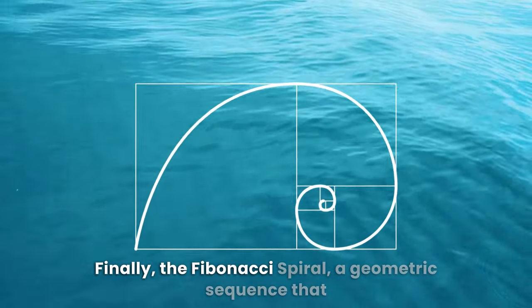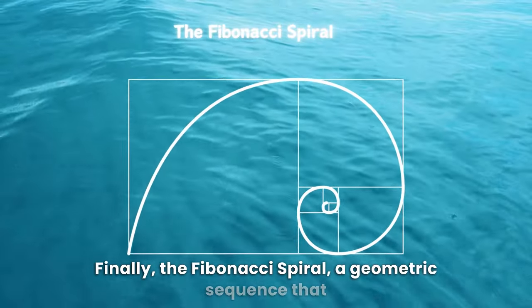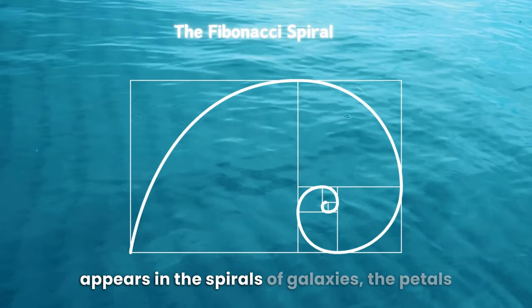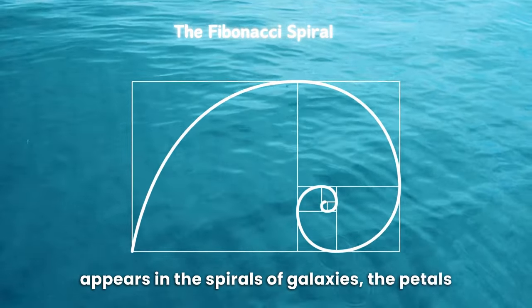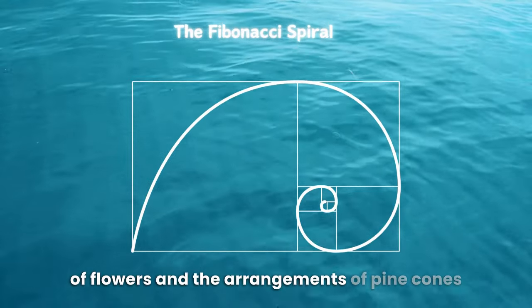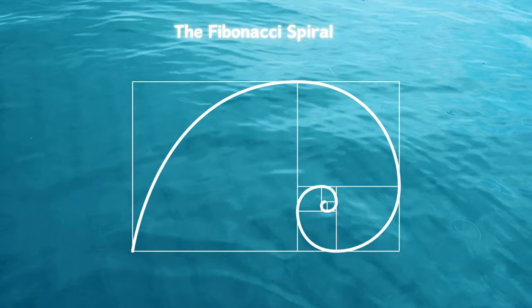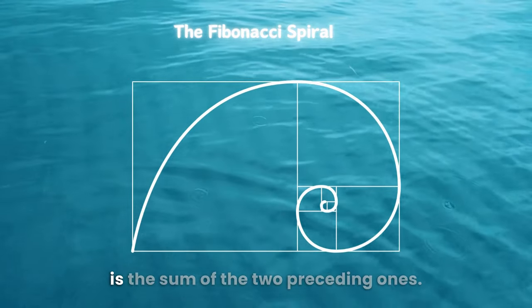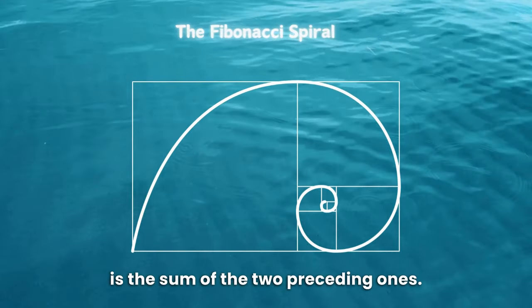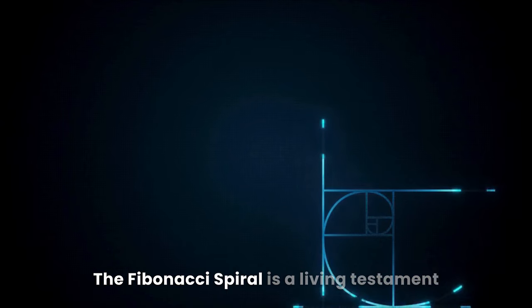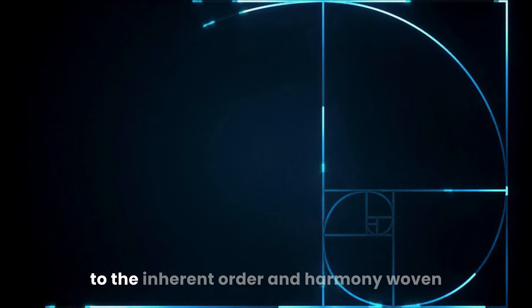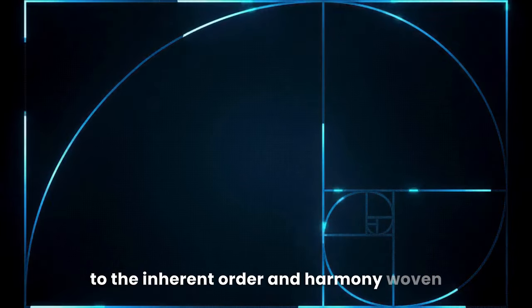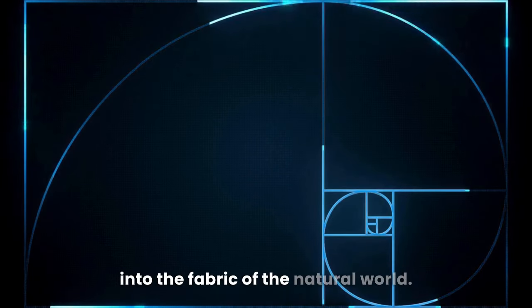Finally, the Fibonacci Spiral, a geometric sequence that appears in the spirals of galaxies, the petals of flowers and the arrangements of pine cones. Derived from the Fibonacci sequence, where each number is the sum of the two preceding ones, the Fibonacci Spiral is a living testament to the inherent order and harmony woven into the fabric of the natural world.